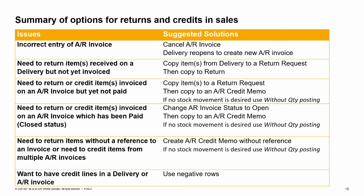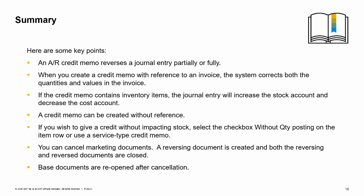An AR credit memo reverses an AR invoice's journal entry either partially or fully. When you create an AR credit memo with reference to the AR invoice, the system corrects both the quantities and values in the invoice. If the credit memo contains inventory items, the journal entry will also increase the stock account and decrease the cost account. A credit memo can be created without reference to a base document, for example when crediting closed paid invoices or when the credit does not relate to any specific invoice. If you wish to give a credit without an impact to stock, select the checkbox without quantity posting on an item row in an item type credit memo, or use a service type credit memo. You can cancel marketing documents such as AR invoices; a new reversing cancellation document is created, and both documents are closed automatically and fully reconciled. Base documents such as a delivery are reopened after cancellation and can be used as a base document again.